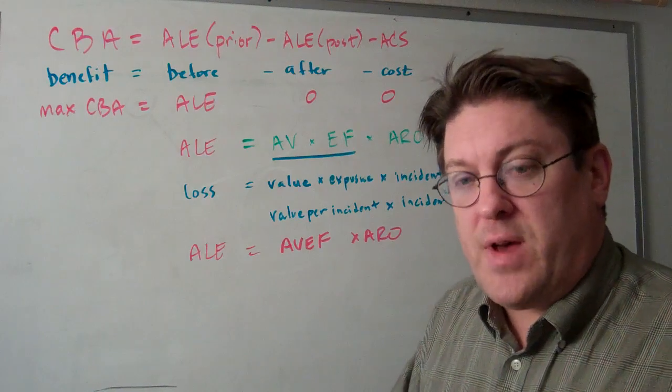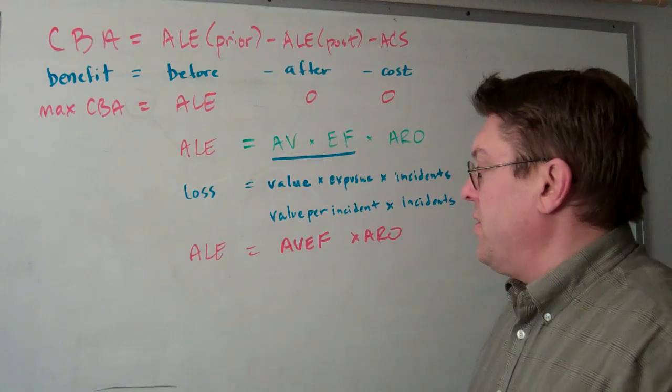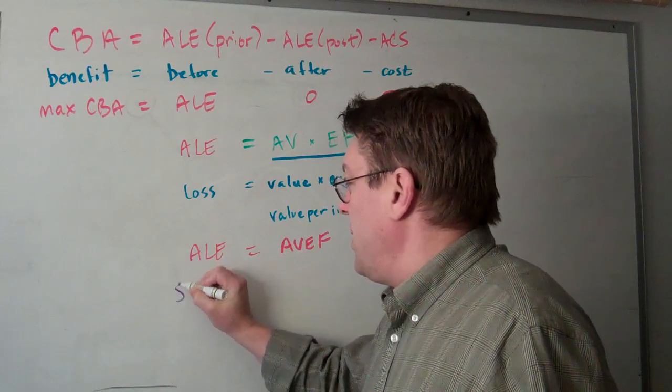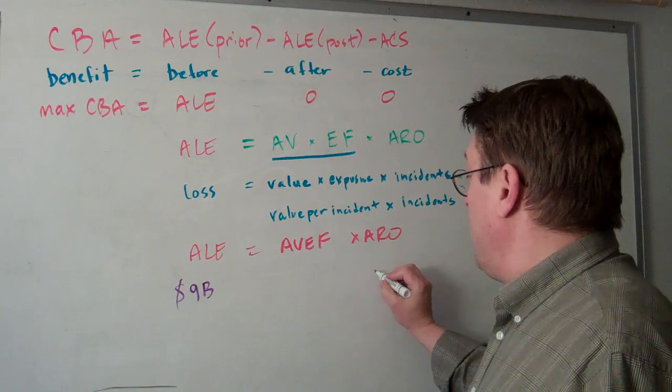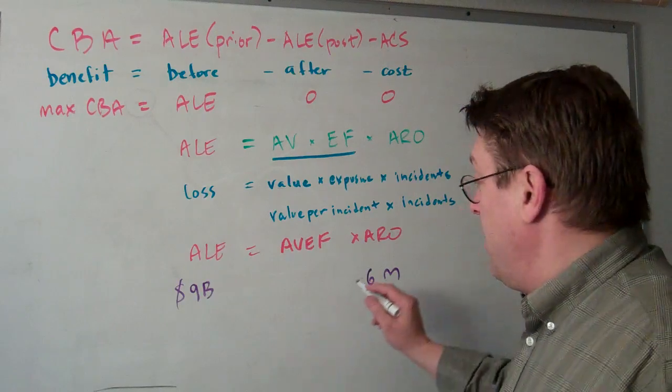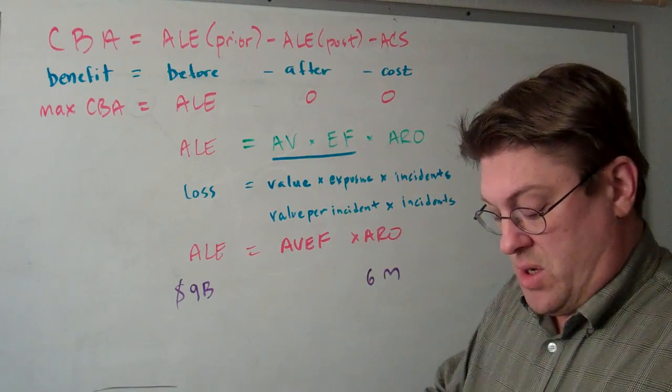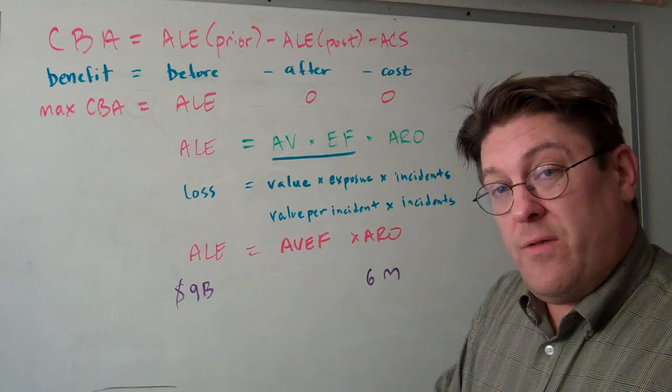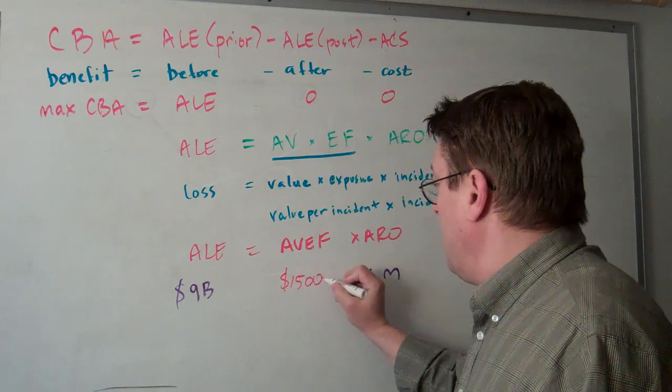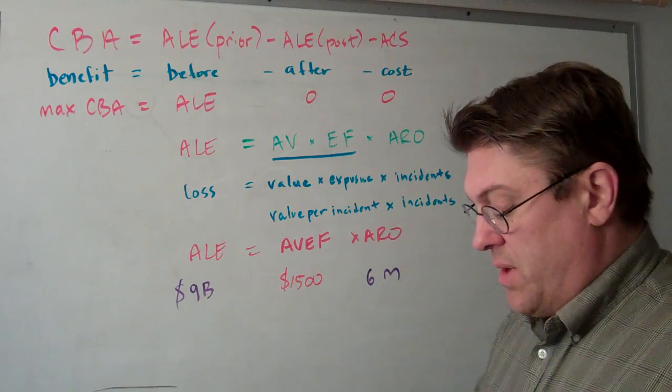That's our modified or simplified Whitman equation. If we know that $9 billion were lost in identity theft, and there were 6 million incidents, then $9 billion divided by 6 million gives us the dollars per incident. That's how we came up with $1500, because 1500 is the AVEF by this computation.